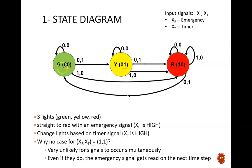Any time that the emergency signal is activated, the light should change to red. This is why the 1-0 arrows all point to red. Any time that the timer signal is activated, the light should move to the next light in the sequence. Green to yellow, yellow to red, and red back to green.